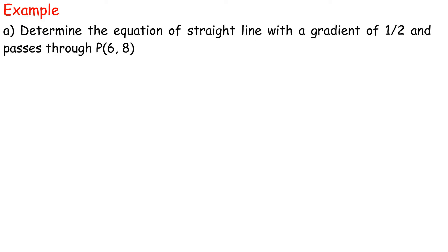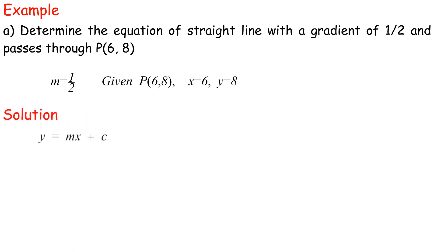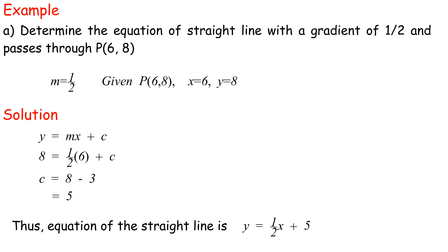Example a: Determine the equation of the straight line with a gradient of half and passing through P(6, 8). m equals half. Given P(6, 8), x equals 6 and y equals 8. Substituting into y equals mx plus c: 8 equals half times 6 plus c, so 8 equals 3 plus c, giving c equals 5. Thus the equation of the straight line is y equals half x plus 5.